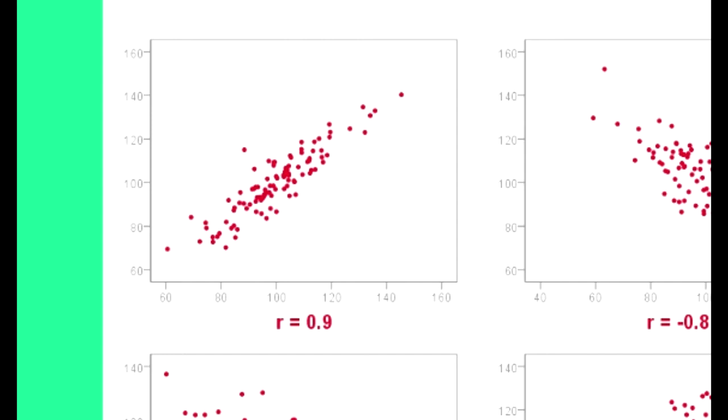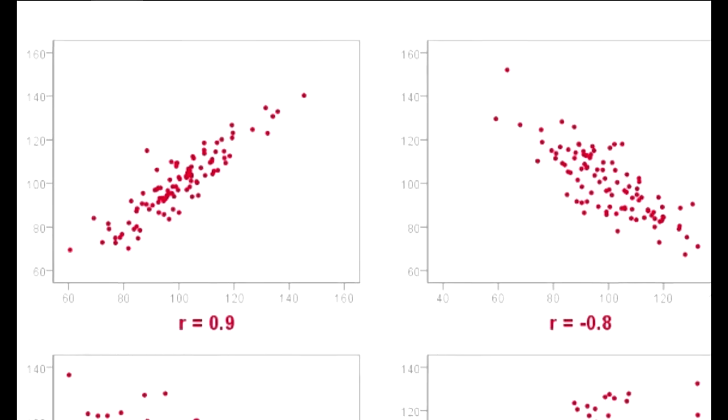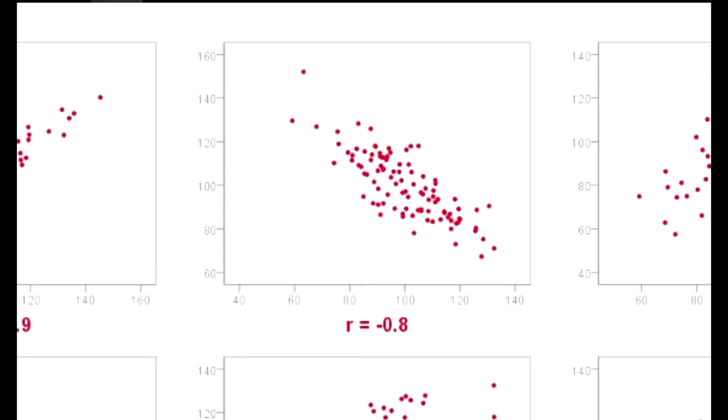Now, r equals 0.9. If we shift to the right, we have r equal minus 0.8. And in this case, dependence goes the other way around. The bigger the value of x, the smaller is the value of y.